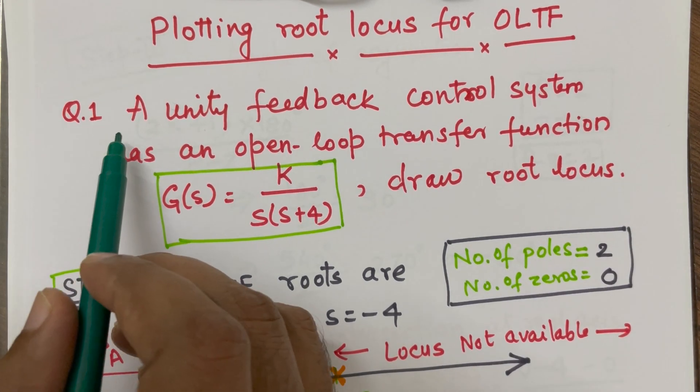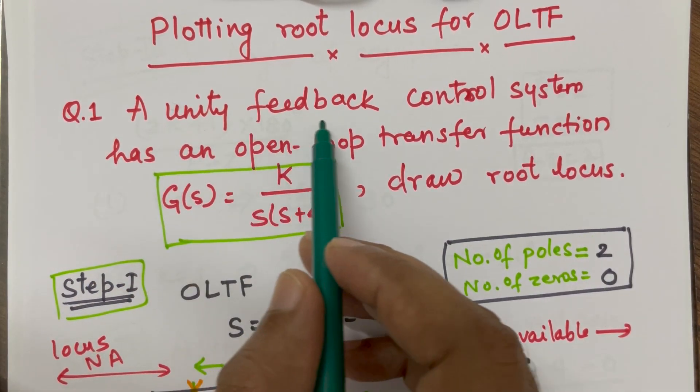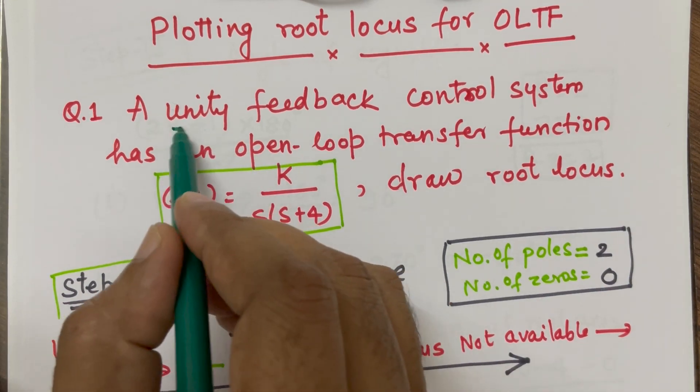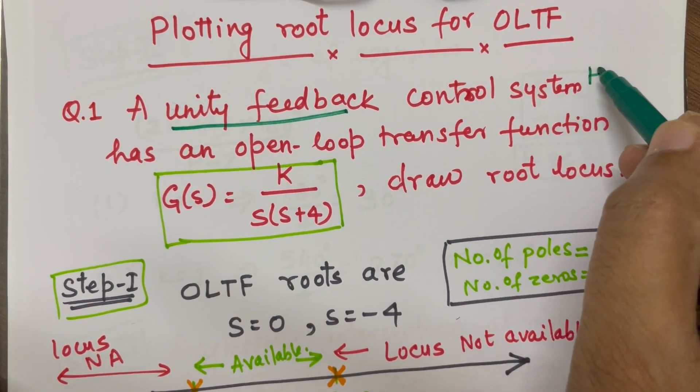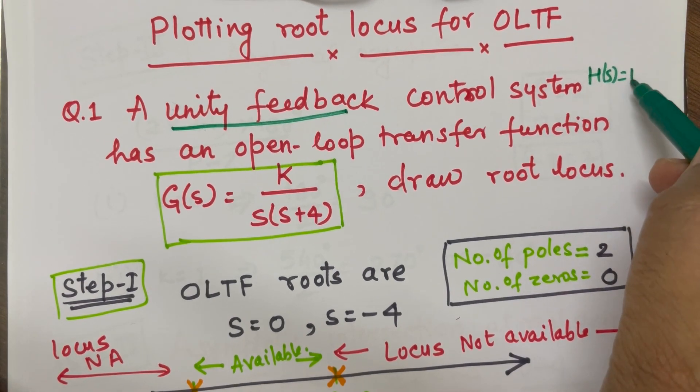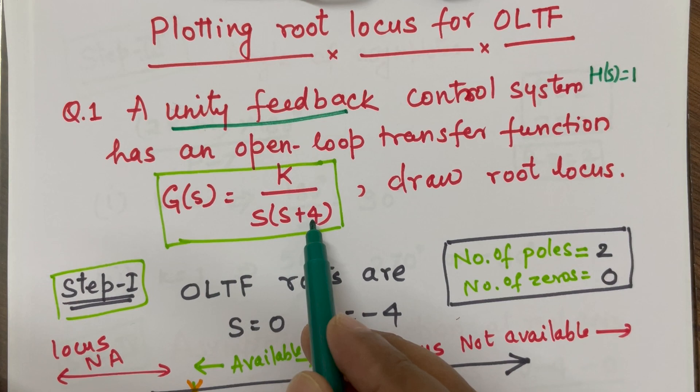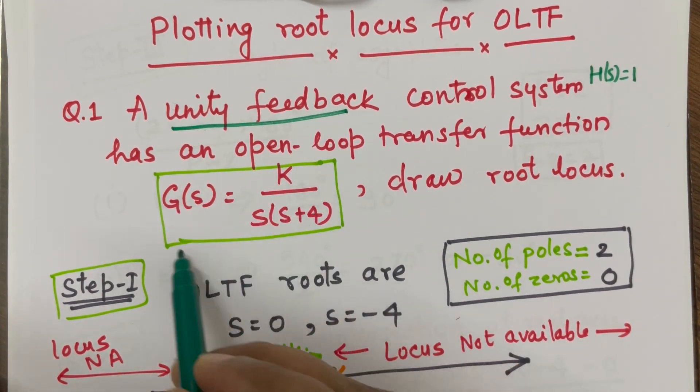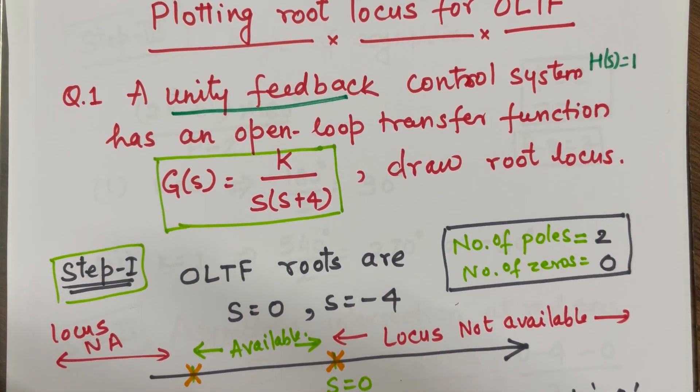First, I am taking this example where we have given a unity feedback control system. Unity feedback in the sense H(s) is equal to 1. Now, G(s) is given as K by s into s plus 4. That means this is for the open loop transfer function. We have to draw or plot root locus.